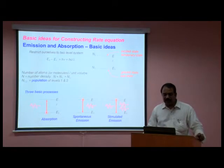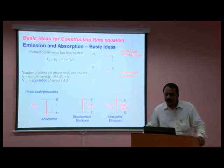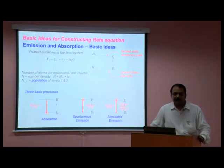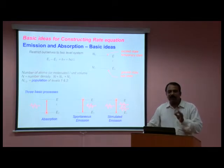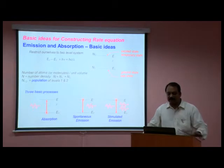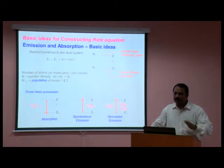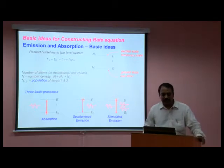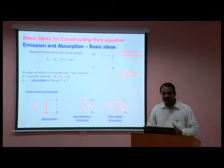In this slide, I have given E1 as the ground state, which is the rest state — it is more stable. E2 is the excited state, which is a temporary state. The atom can only live for a very small period, that is in terms of nanoseconds. The total number of atoms in the assembly is N, which is nothing but N1 plus N2, where N1 and N2 are the populations of atoms in the first and second levels.